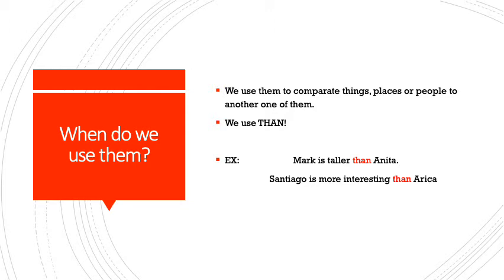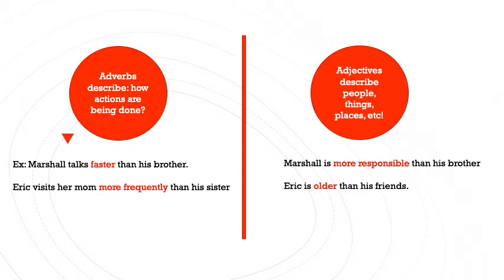Let's see some of the things we need to have in mind. To create a comparative sentence, we need to know that we have adverbs and adjectives. Adverbs describe how actions are being done. In this case, we have the first example: 'Marshall talks faster than his brother.' We are comparing Marshall and his brother, referring to the way Marshall talks — Marshall talks faster than his brother.